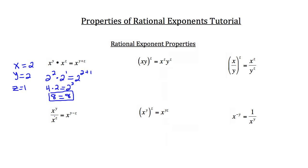Let's look at the division property of rational exponents, using the same values for x, y, and z. So x, which is 2, raised to y, which is also 2, over x, which is 2, raised to z, which is 1, equals x to the y minus z — so 2 to the 2 minus 1.